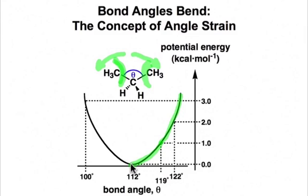To compress it even down to 100 degrees, which is still far away from the 60 degrees of cyclopropane, costs us about 3 kilocalories per mole, and this curve is steeply climbing.